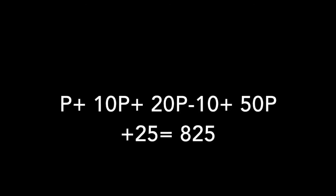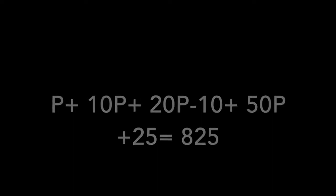Now you have one long equation. Add them all up and set that equal to 825, because she found $8.25 — which in cents is 825. So: P plus 10P plus 20P minus 10 plus 50P plus 25 equals 825. That might seem time consuming at first, but the more of these problems you do — they're all the same with different numbers — the faster you get.